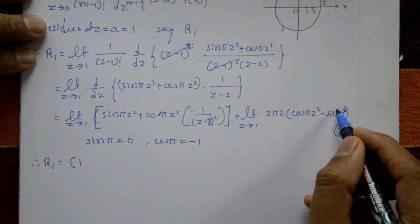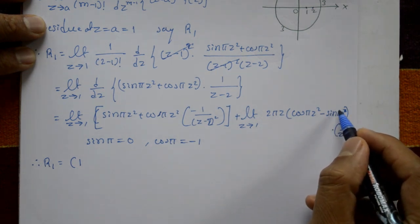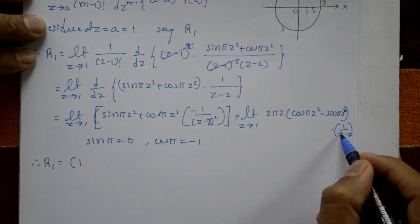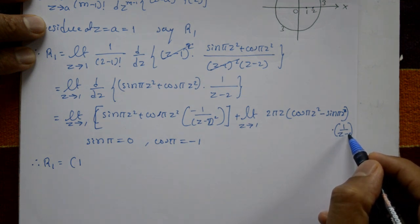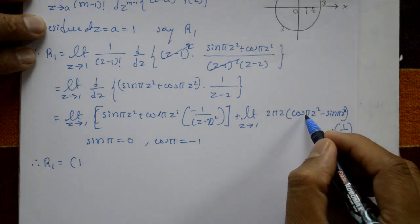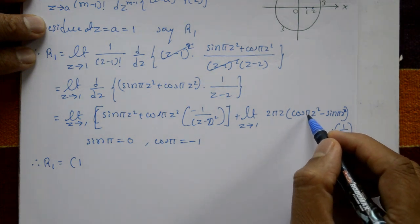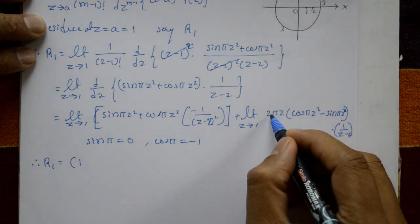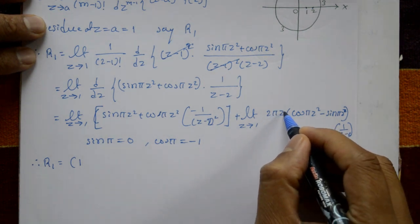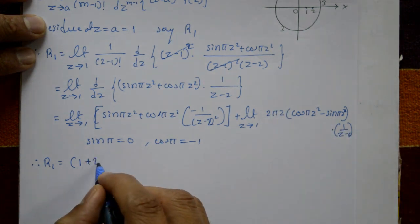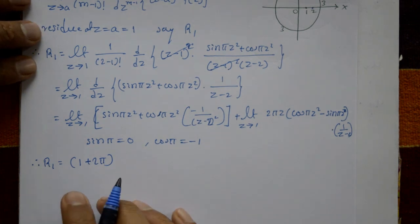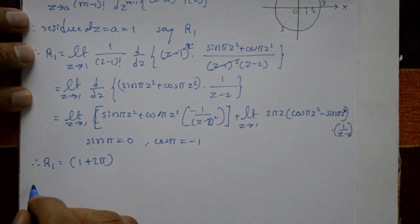Substituting z = 1: sin π = 0, cos π = -1. The first term becomes zero. The remaining term gives 2π × (-1) × (-1) × 1/(1-2) evaluated appropriately. Therefore R1 = 1 + 2π.